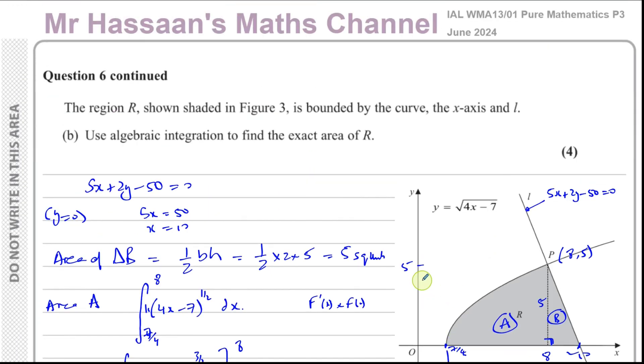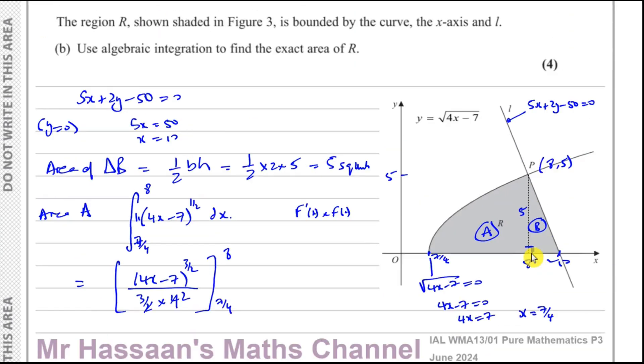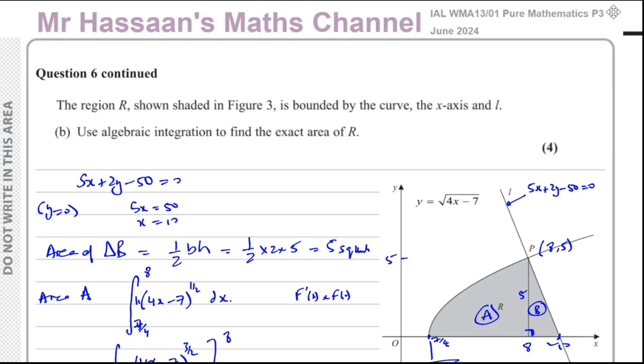And that is the answer to question number 6, part B. You can find the first part of this question, 6A, if you go to the playlist, which will be linked at the top of the screen at the end of this video. Other questions from the topic of integration from P3, you can find it in the playlist. Specifically, reversing the chain rule, you'll find a link over here. You can subscribe to the channel by clicking on the link at the top of the screen. Thank you for watching and see you soon.